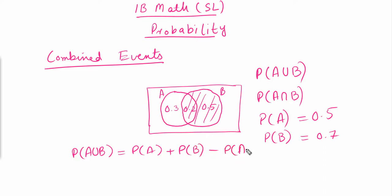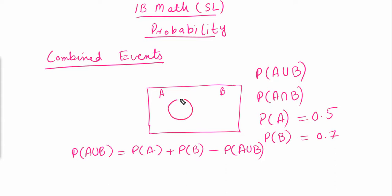This is the formula for combined events. Now there are two types of events: mutually exclusive and mutually non-exclusive. These events are not mutually exclusive because there is an overlapping region. Whenever there is no common region between two events, they are called mutually exclusive events. For mutually exclusive events, the Venn diagram shows event A and event B with nothing in common, so P(A ∩ B) = 0.